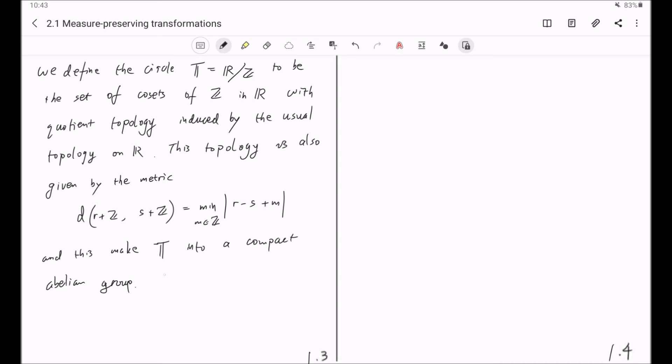And the interval [0, 1), which is closed at 0 and open at 1, is a so-called fundamental domain for the Z action on R. So here, Z acts on R by translations.